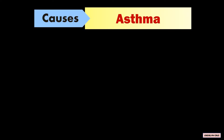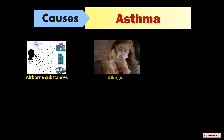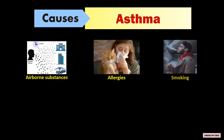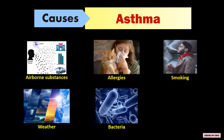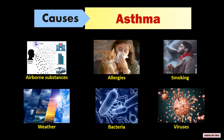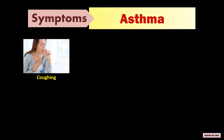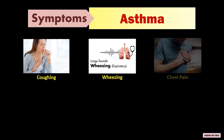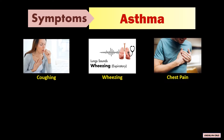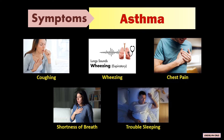Asthma is triggered by airborne substances, allergies, smoking, weather, common bacteria, and viruses. The symptoms of asthma are coughing, wheezing, chest pain, shortness of breath, and trouble sleeping.